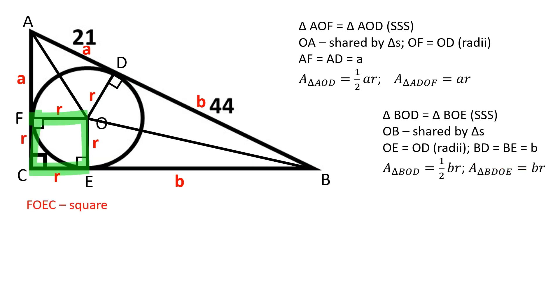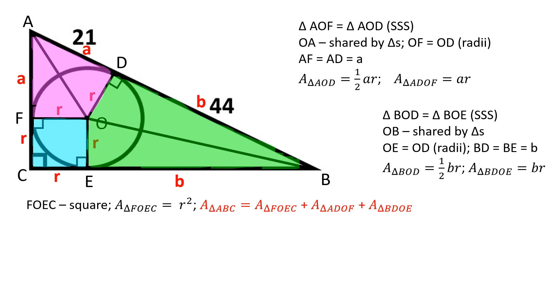FOEC is a square whose area is equal to R squared. The area of the triangle ABC is equal to the sum of three quadrilaterals.